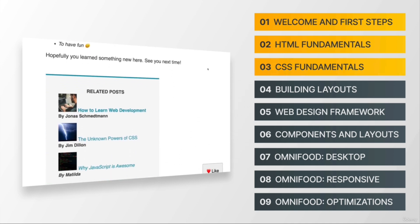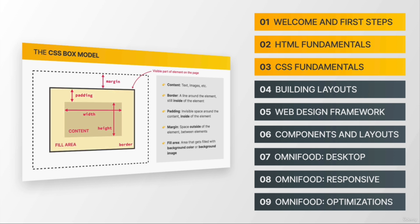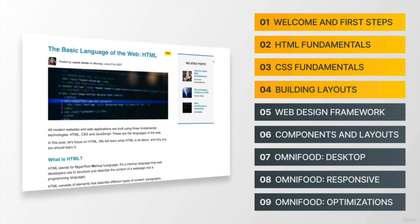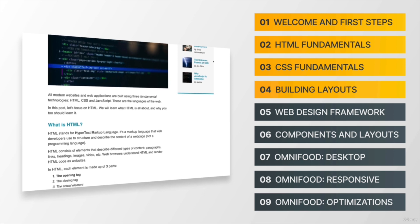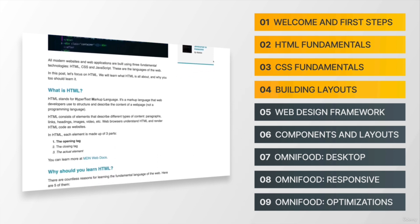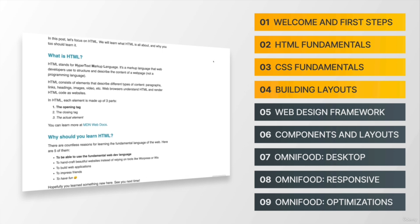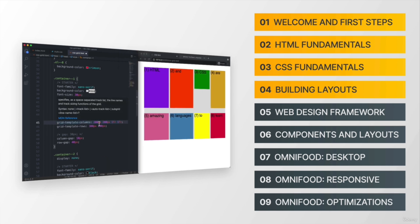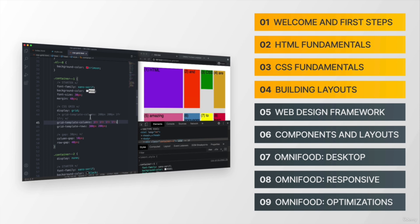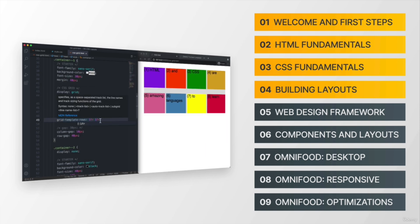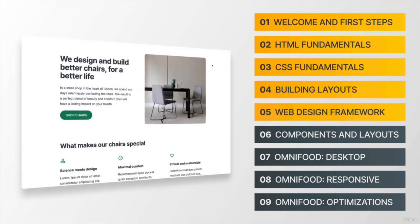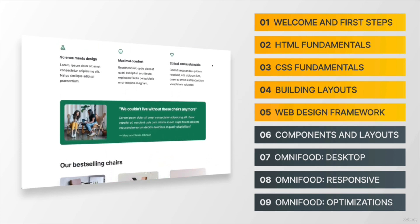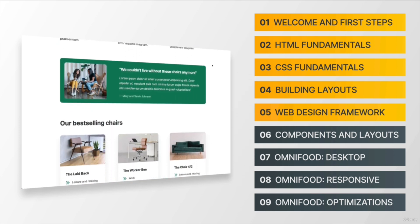We will even talk about some developer skills such as reading documentation and debugging. Section four is all about building layouts using CSS — basically how to arrange elements on the page in a logical way. We will learn multiple ways to do this, focusing on modern technologies called Flexbox and CSS Grid. Then in section five, we take a small break from web development and move on to web design.